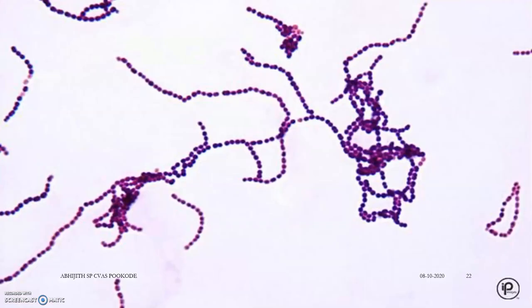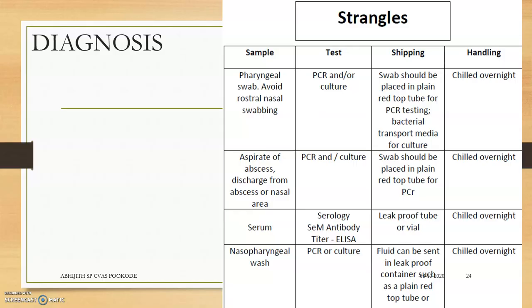These are the Streptococcus bacteria as viewed under the microscope, showing the scab lesions. Diagnosis is usually done via pharyngeal swab testing, aspiration of the abscess, abscess testing, serum testing, and nasopharyngeal washes.